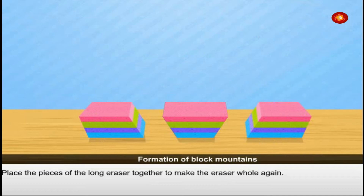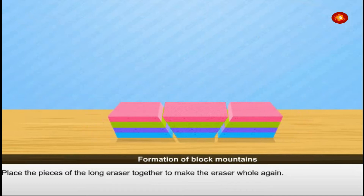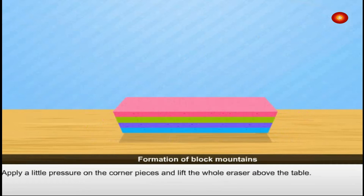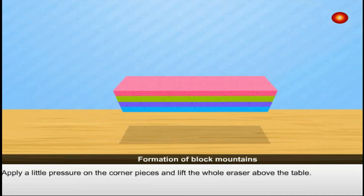Place the pieces of the long eraser together to make the eraser whole again. Apply a little pressure on the corner pieces and lift the whole eraser above the table.